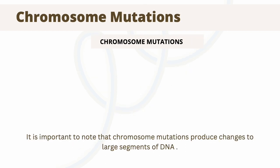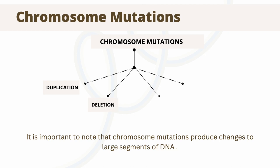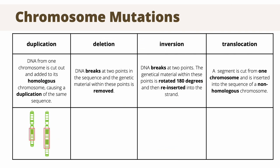Along with point mutations, you can also have chromosome mutations. Chromosome mutations differ from point mutations as they result in changes to large segments of DNA, rather than just single nucleotides, and this can result in drastic changes. As shown by the flowchart, chromosome mutations can be split into duplications, deletions, inversions, and translocations. Duplication mutations are where a segment of genetic material is spliced from a chromosome and inserted into the homologous chromosome — homologous chromosomes refer to the other chromosome in the pair, as chromosomes occur in pairs of two.